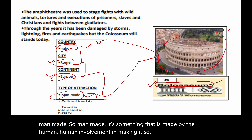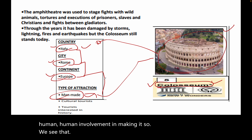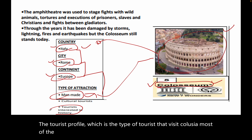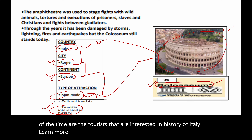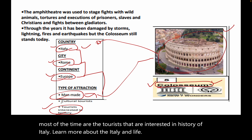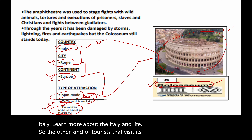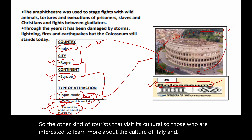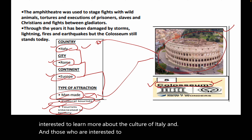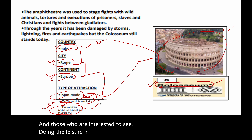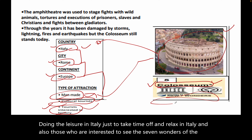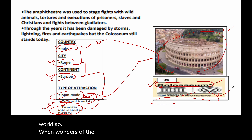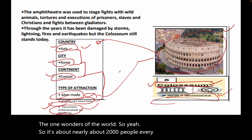The tourist profile — the type of tourists that visit the Colosseum — are mostly those interested in the history of Italy and learning about Italian life. Others are cultural tourists interested in the culture of Italy, those seeking leisure and relaxation, and also those interested in seeing the Seven Wonders of the World. About 2,000 people visit the Colosseum every year.